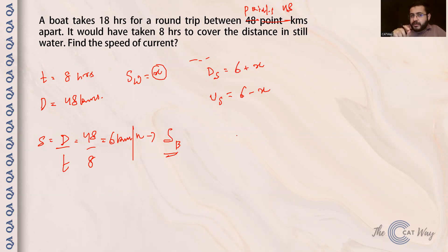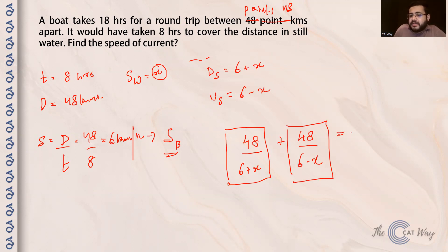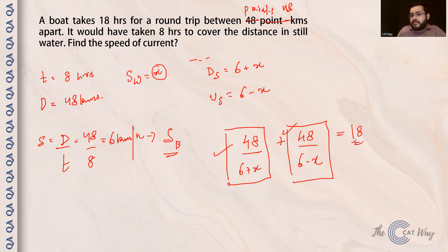The distance is 48 km. In still water, speed = distance / time = 48 / 8 = 6 km/h. This is the speed of the boat. Let the speed of the current be X. So downstream speed = 6 + X and upstream speed = 6 − X. For the round trip, total time is 18 hours, so: 48 / (6 + X) + 48 / (6 − X) = 18.